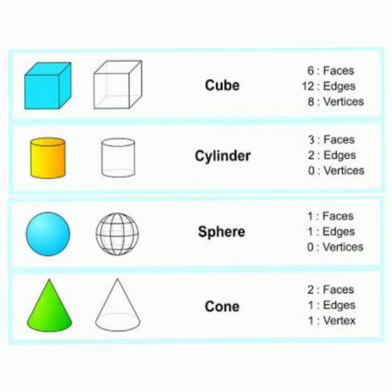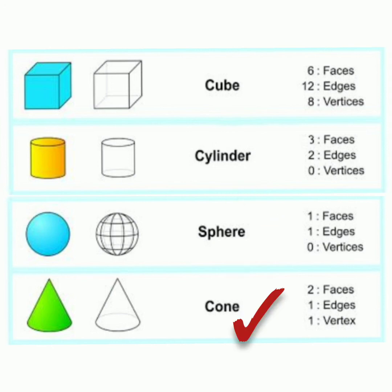Now here in this picture you can find out the number of faces, edges, and vertices in different shapes: a cube, cylinder, sphere, and cone. You can pause this video and analyze all this data yourself. Take a cubical box, a cylinder, a spherical ball, or a conical cap and find out the number of faces, edges, and vertices. I hope you understand it all — take care of yourself and keep learning, thank you.